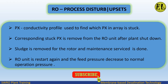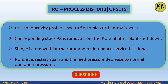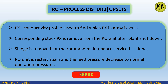The corresponding stuck PX is removed from the RO unit after plant shutdown. Sludge is removed from the rotor and maintenance service is performed. The RO unit is then restarted and the feed pressure decreases back to normal operating pressure.